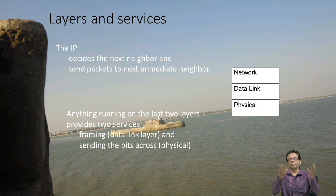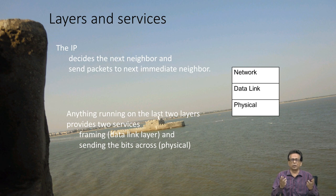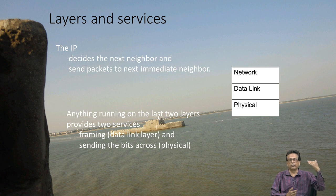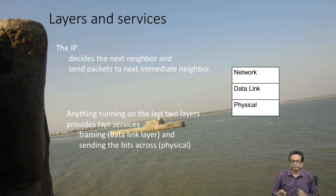The network layer has to know who is sitting where, which server is where. For example, when I type www.yahoo.com, it must know where the Yahoo server is and send that content to the router next to it, which is nearest to that Yahoo server. So that is the job of the network layer.